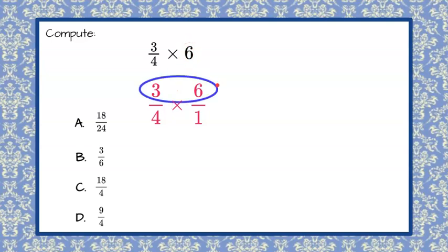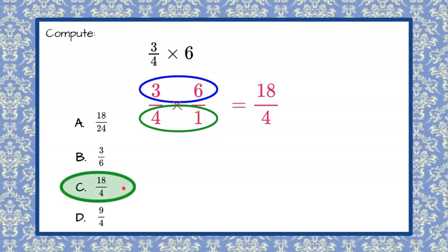So let's go ahead and multiply. 3 times 6 is 18, and 4 times 1 is 4, so that gives us 18 fourths. And in this problem that I don't ask you to simplify, we can see that our solution is C.